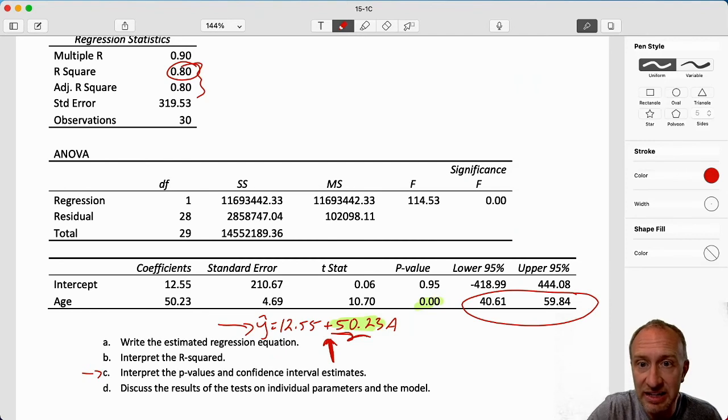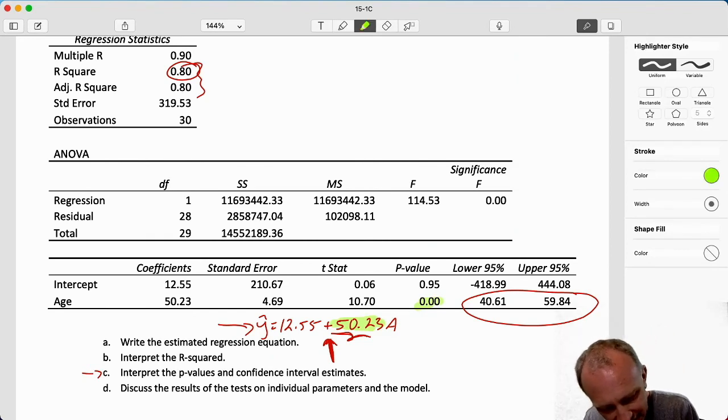And finally, let's see part D, discuss the results of the tests. We've basically already talked about that our p-value is zero. This is a simple linear regression. So our p-value in the f test is exactly the same. I shouldn't say exactly zero. It's exactly the same. There'll be a non-zero value somewhere in there.